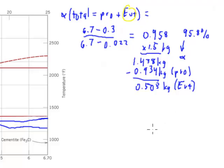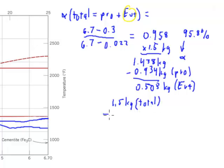Finally, to find the amount of cementite, it's pretty straightforward. We could use this lever rule one more time. Or we could just take 1.5 kilograms of total mass and subtract 1.438 kilograms of alpha, and we get 0.062 of the cementite.